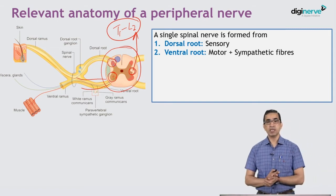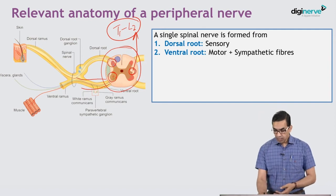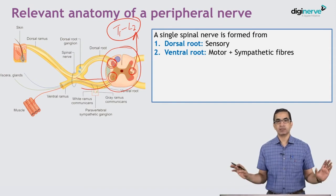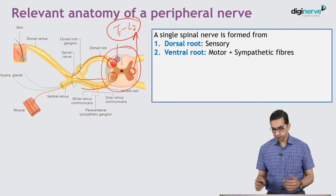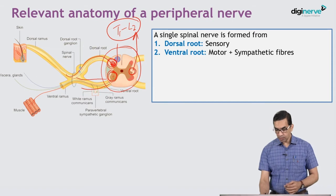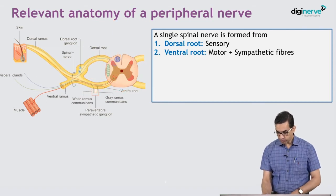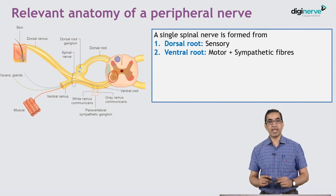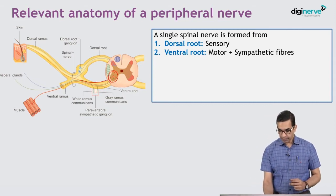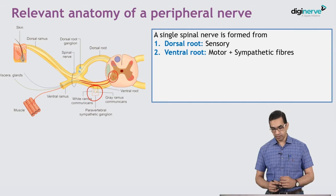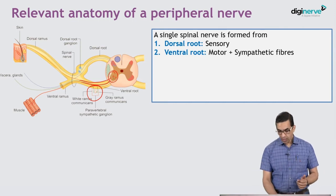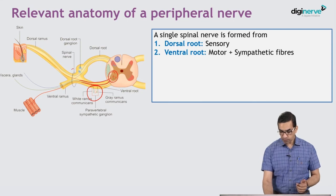Just to remind you, as we discussed in the spinal cord injury session: this is the posterior horn which receives all the sensation from the entire body — visceral and somatic sensations are received in the dorsal horn, from where they are relayed to the brain in the sensory area. The ventral horn — these red dots are the anterior horn cells which give rise to axons. These axons exit via the ventral root, which is further joined by the white and grey ramus communicants from the paravertebral sympathetic ganglion. Together these two form the spinal nerve.